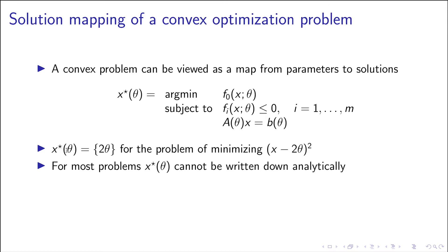So here we know this mapping exactly—it's just x equals 2θ, that's the solution. So the mapping from theta to x is 2 times theta. But generally speaking, the solution of a convex optimization problem cannot be written down analytically.